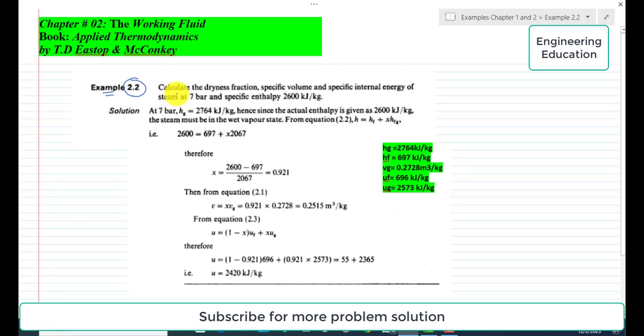The statement of the example is: Calculate the dryness fraction, specific volume, and specific internal energy of steam at 7 bar and specific enthalpy 2600 kJ/kg. First, we will write the given data. We have pressure P = 7 bar and specific enthalpy h = 2600 kJ/kg.